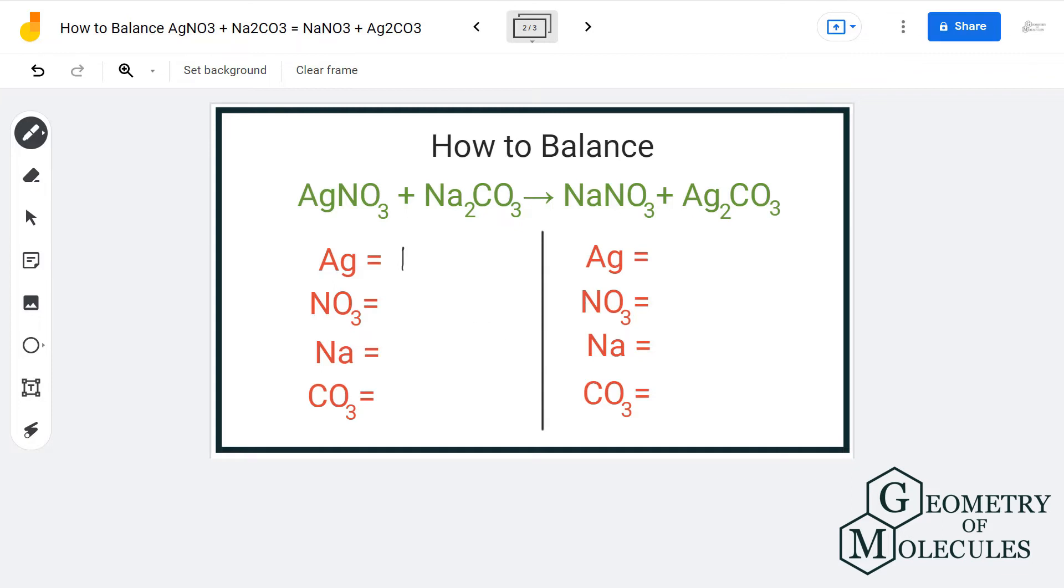Here I have one silver atom and one NO3 group, two sodium atoms over here because it is Na2, and one CO3 group. Let's repeat it for the product side. On product side I have two silver atoms.